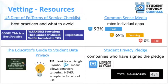Here are some useful vetting resources to aid you through the process. The U.S. Department of Education has a terms of service checklist showing what you want to see in a tool's policies and what should be avoided. Common Sense Media evaluates the privacy policies of a large number of apps and services, rating them with a score of pass, warning, or fail. ConnectSafely and the Future of Privacy Forum created an educator's guide to student data privacy with helpful tips and questions to ask when vetting apps. One good tip is to look for the triangle-eye symbol, which means that service allows behavioral targeting and is therefore never acceptable for school use. Lastly, the Student Privacy Pledge by the Future of Privacy Forum is a set of commitments — essentially identical to those we've introduced here — that companies have signed on to upholding, and currently there are 434 signatories.